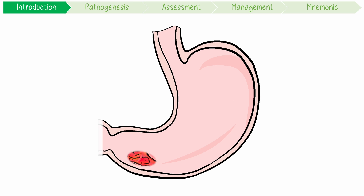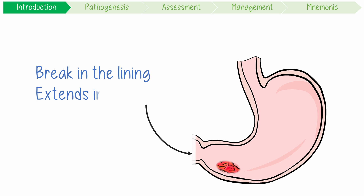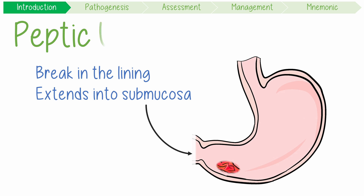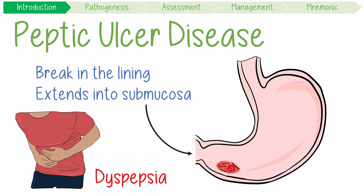A peptic ulcer is a break in the lining of the stomach or the duodenum, causing an inflamed lesion which extends into the submucosa. In peptic ulcer disease, or PUD, this causes dyspepsia, defined as pain or discomfort in the upper abdomen.